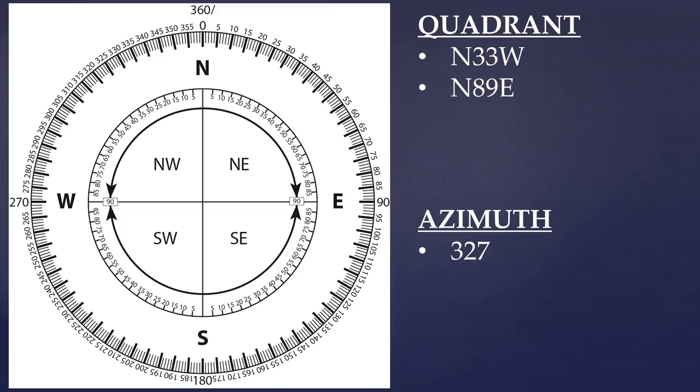For the next one, north 89 east. So I'm in the northeast quadrant. 89 degrees is just barely there before I put due east, right? And so north 89 east is just 89 degrees azimuth. And normally you put a degree symbol on these, just so you know.